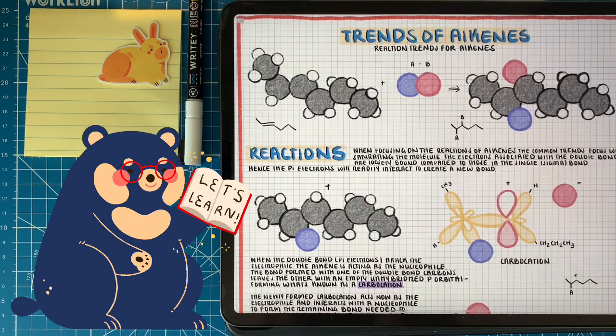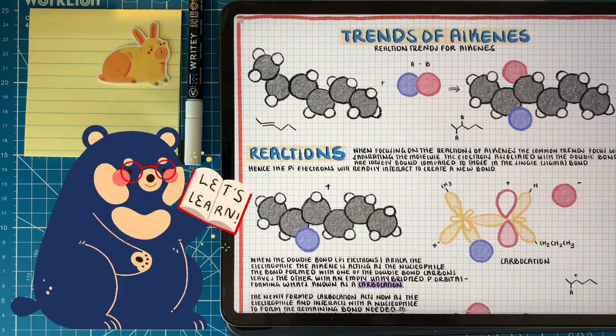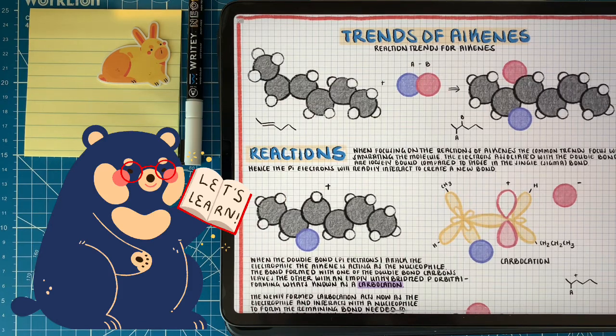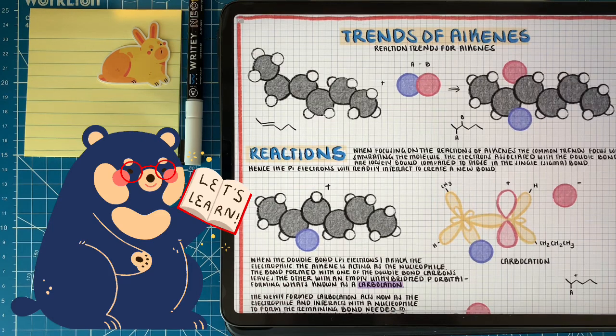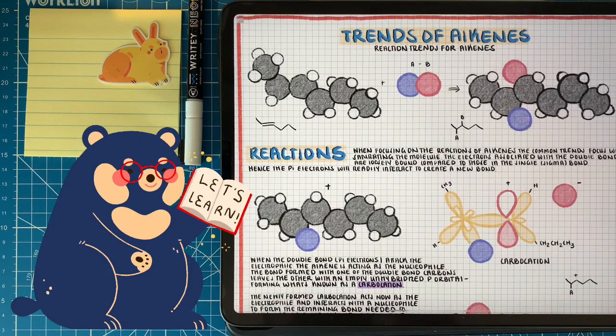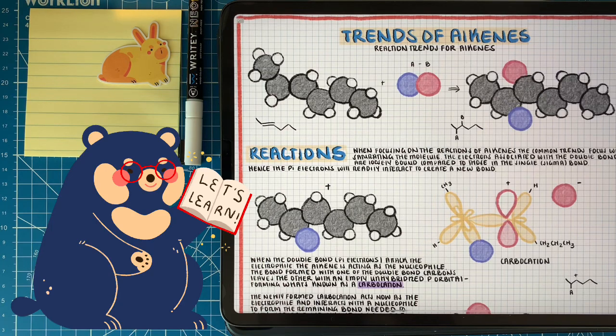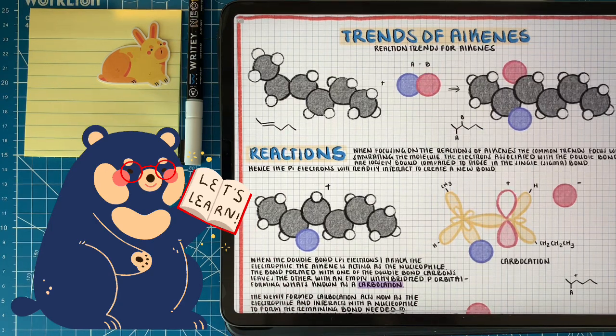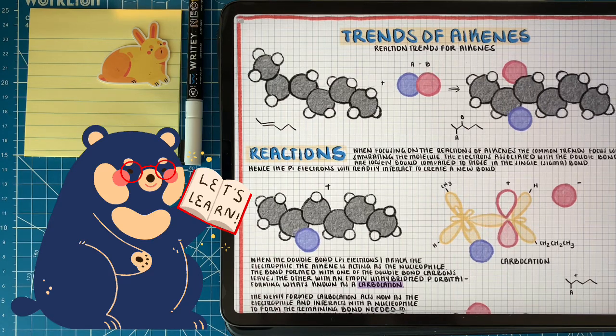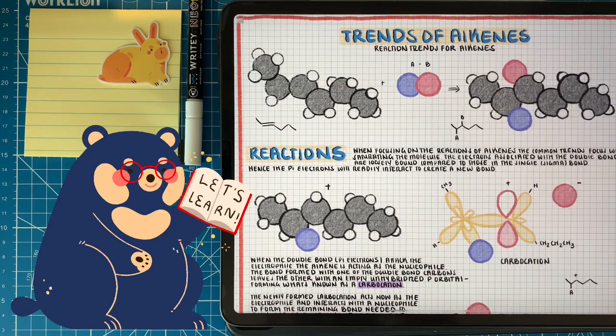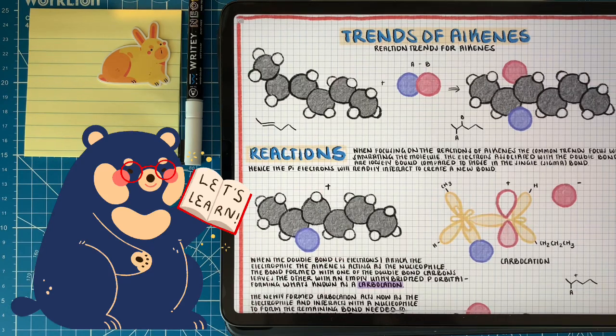When it comes to studying organic chemistry reactions, especially those centered around a specific functional group, we try our best to focus on trends of that functional group. In the case for alkenes, it's electrophilic addition, meaning that the electrophile that the alkene is going to react with is going to get added to the double bond, saturating it. Each of the carbons of that double bond are going to have a new bond to a new group.